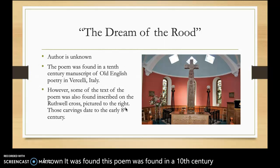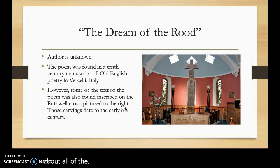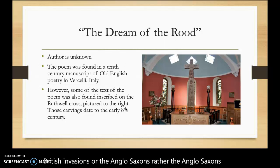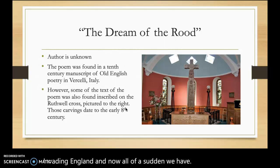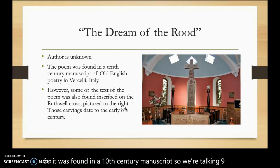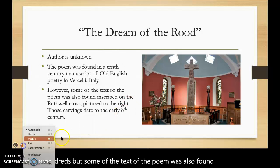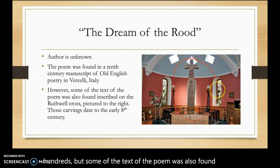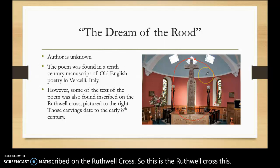We're talking about the Anglo-Saxons invading England, and now all of a sudden we have a poem about that time and about those people all the way over in Italy. It was found in a 10th century manuscript, so we're talking about the 900s, but some of the text of the poem was also found inscribed on the Ruthwell Cross. This is the Ruthwell Cross — those carvings on this cross date back to the early 8th century, so the early 700s.